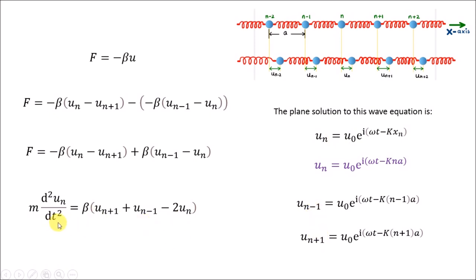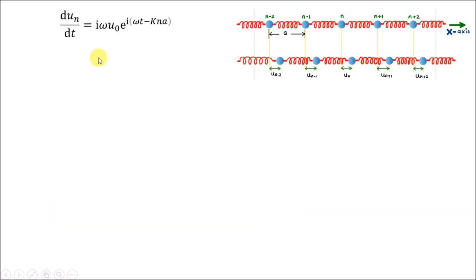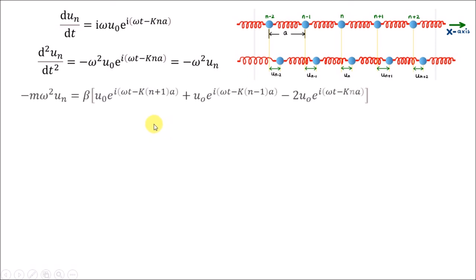We will use the solutions for u_n, u_{n-1}, and u_{n+1} in our force expression. First, we need the expression for d²u_n/dt². Differentiating u_n twice with respect to time, we get d²u_n/dt² = -omega² u_n. We then replace all terms u_n, u_{n+1}, and u_{n-1} with their respective expressions, and the force equation takes the corresponding form. We can factor out u_0 e^{i(omega t - kna)}, which is u_n, and equate the coefficients of u_n on both sides.